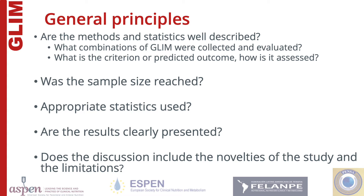GLIM consists of different criteria — three phenotypic and two etiologic. To better understand how GLIM works, it is important that validation studies clearly describe which combinations of the five criteria have been used. Different criteria can fit better with some diseases but less so with others. For example, the BMI criterion may be less relevant for an obese population because it will never reach the cutoff point. In contrast, body composition may be very informative for the obese, particularly considering sarcopenic obesity. Inflammation may be more relevant for an ICU population and dietary intake for a geriatric population. Therefore, methods of submitted articles need to clearly define which combinations of criteria were used to determine the validity of GLIM.